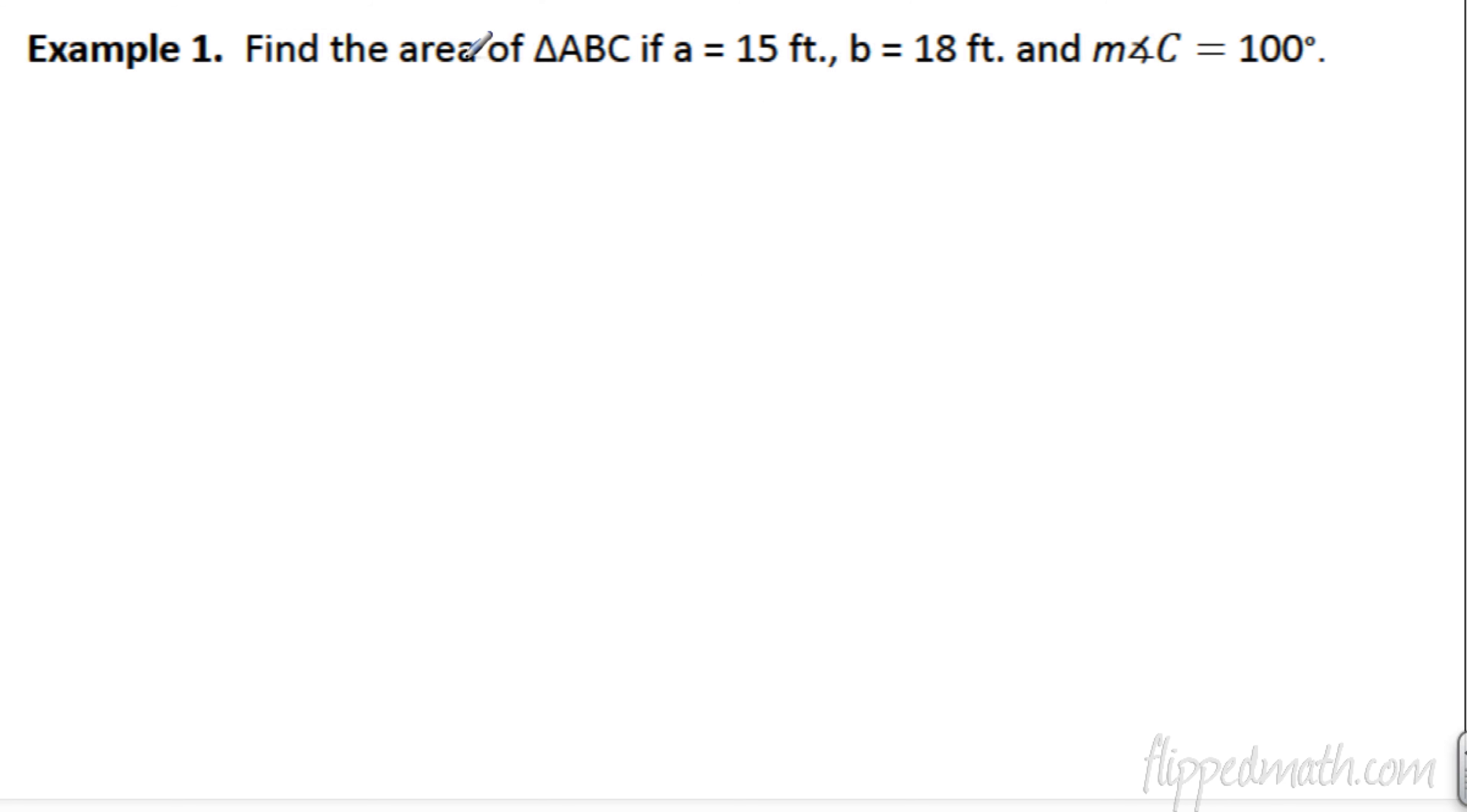First example. Find the area of triangle ABC if A is 15, B is 18, and the measure of angle C is 100. So, I'm going to draw that angle C first. It's a little bit obtuse, just like Mr. Brust. We're going to draw that down there. So, this is going to be C. Let's throw an A and a B on here. So, side length A is 15. Side length B is 18. Side length C is, we don't know, but we would have to use the law of cosines to figure that all out. But, we don't have to do that because we know that the area of a triangle is equal to one half AB times the sine of C.